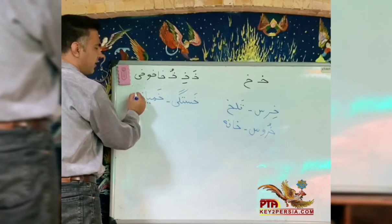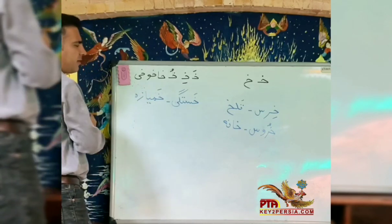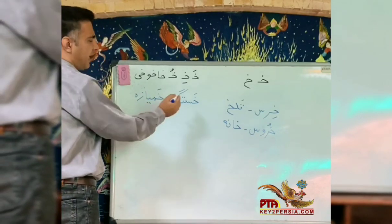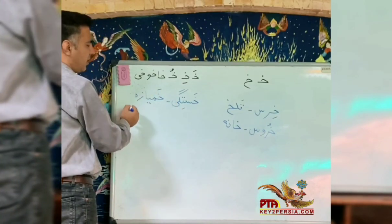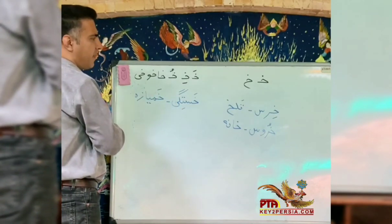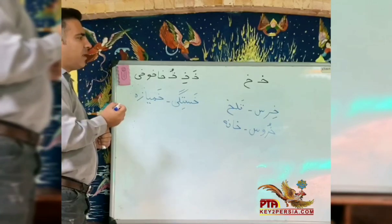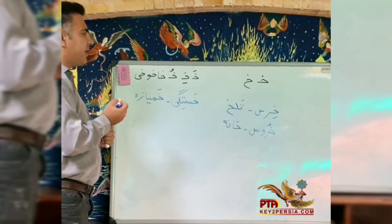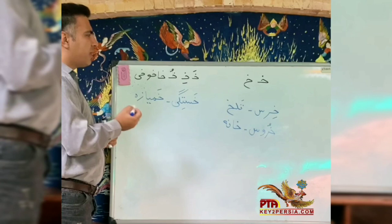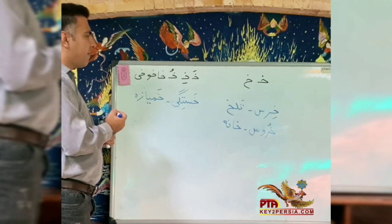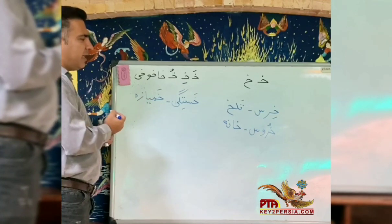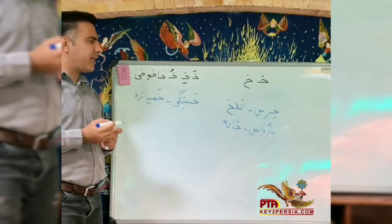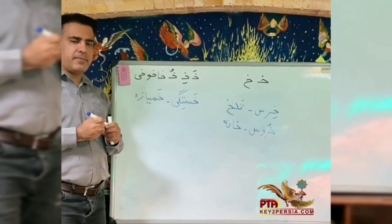There are also three-syllable words. Now you know how the letter looks, you can make the letter sound, and you know some words with this letter. That's all about the letter.